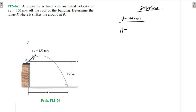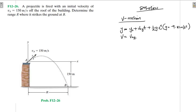For vertical motion, the final position equals the initial position plus the initial velocity in the y-direction times time plus half g t-squared, where g equals minus 9.81 meters per second squared. Then we have: final velocity equals initial velocity plus g times t. And also: final velocity squared equals initial velocity squared plus 2g times (final position minus initial position).